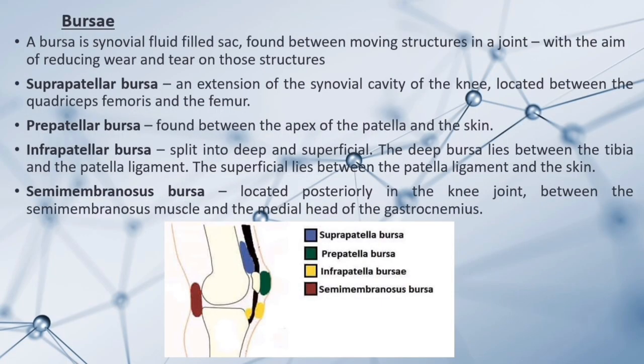Bursae. A bursa is a synovial fluid-filled sac found between moving structures in a joint, reducing wear and tear. There are four bursae in the knee: the suprapatellar bursa, an extension of the synovial cavity between the quadriceps femoris and the femur; the prepatellar bursa, between the apex of the patella and the skin; the infrapatellar bursa, split into deep (between tibia and patella ligament) and superficial (between patella ligament and skin); and the semimembranosus bursa, located posteriorly between the semimembranosus muscle and the medial head of the gastrocnemius.